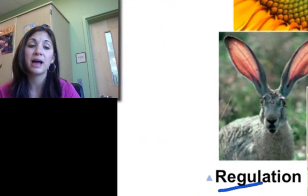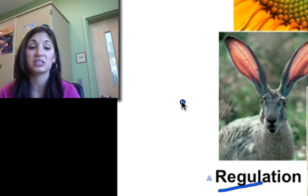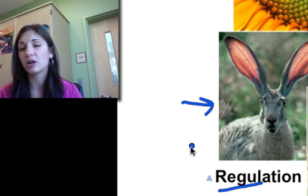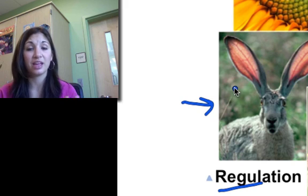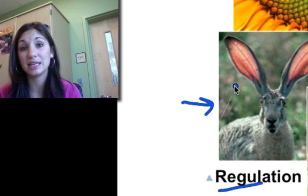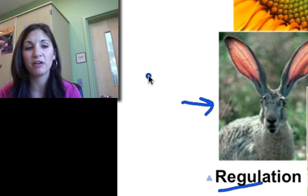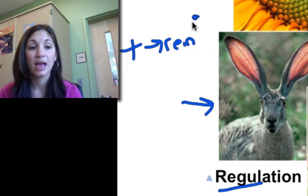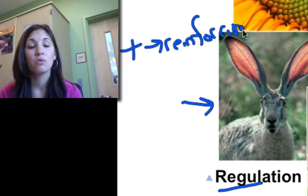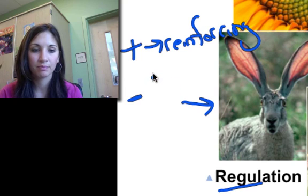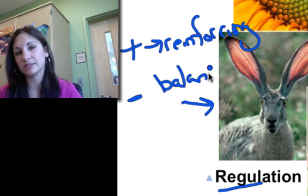Regulation ties back in with homeostasis and responding to the environment. The jackrabbit's ears, which we talked about earlier, are really large to allow heat exchange with the environment. Homeostasis is a key theme. We have both positive feedback — which is reinforcing — and negative feedback — which is balancing. Negative feedback shuts off the system.